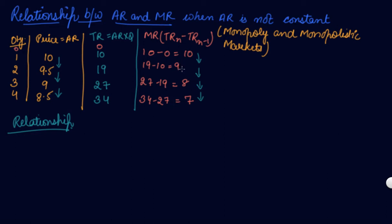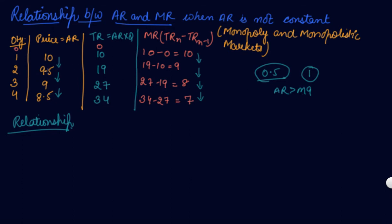When AR is declining by 0.5, your MR is declining by 1. This proves that under monopoly and monopolistic competition, MR declines faster than AR. Your AR is declining at the rate of 0.5, while your MR is declining at the rate of 1.